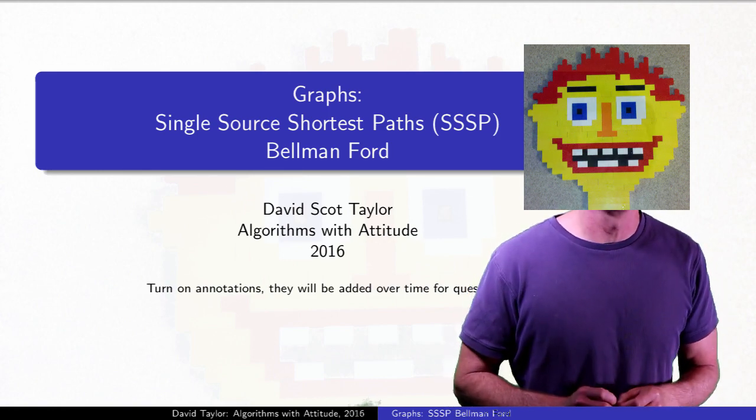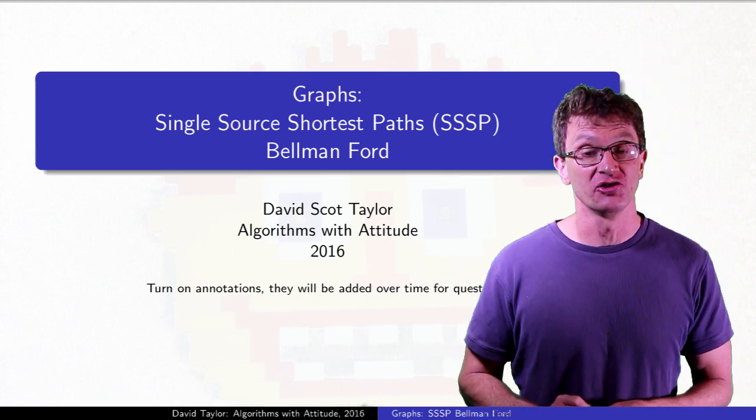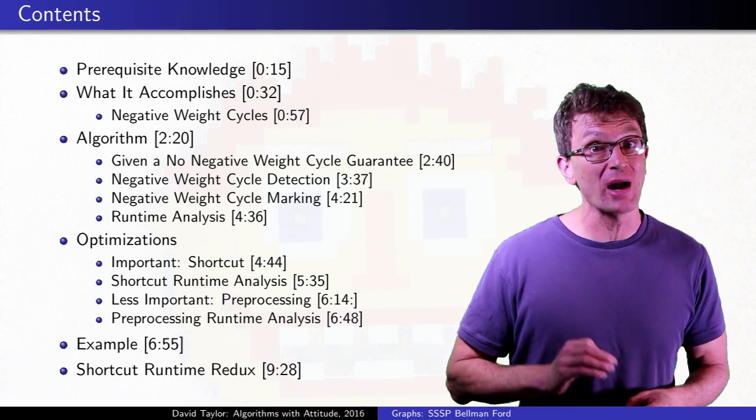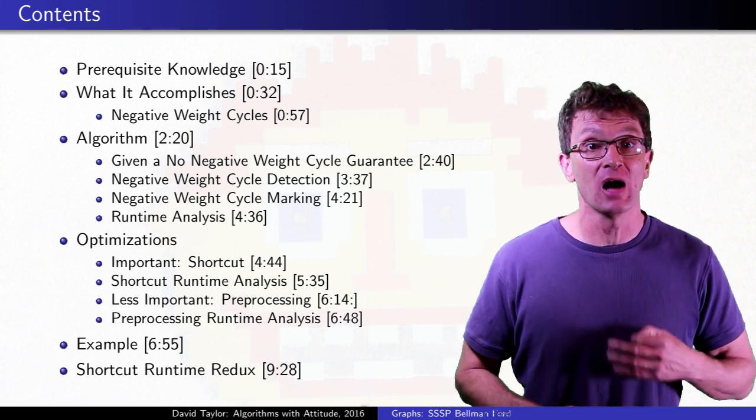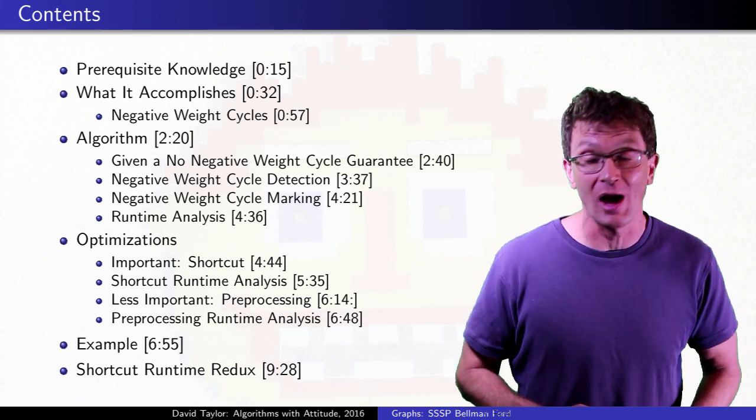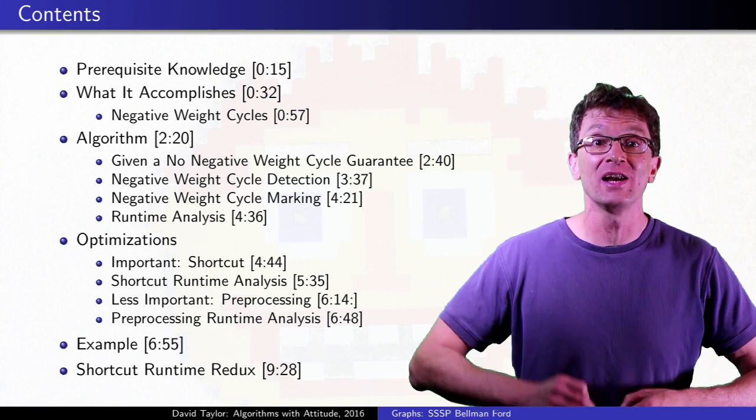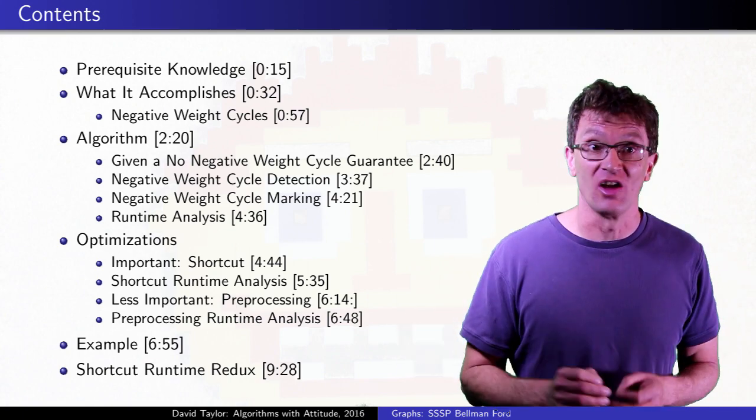This video covers the Bellman-Ford algorithm for finding single source shortest paths. After a quick review of the prerequisite knowledge, we'll see what the algorithm accomplishes, how and why it works, how quickly it works, a few optimizations, and we'll finish with a worked example.